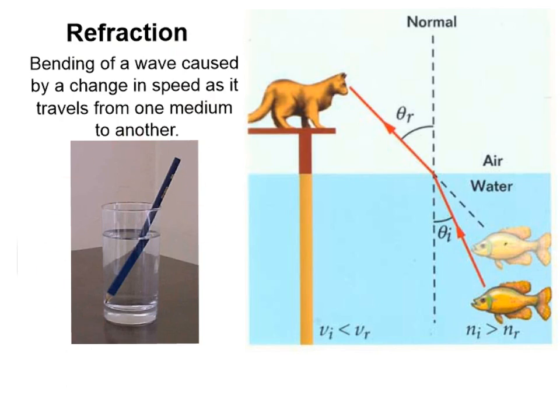It's the same reason that a pencil appears to be bent in water. The light waves coming from the part of the pencil that is underwater are refracted, but our brain interprets them as though they're traveling in a straight line. The part of the pencil above the water has no refraction, so it gives the appearance of being broken.